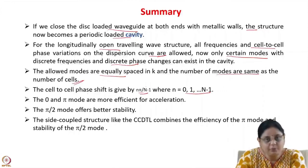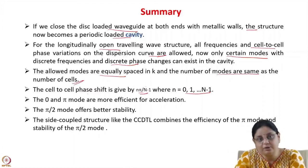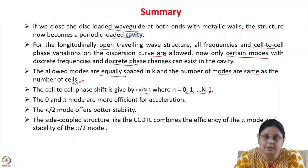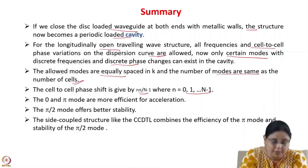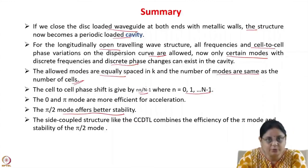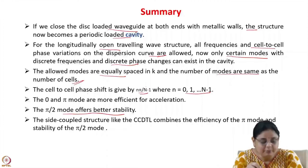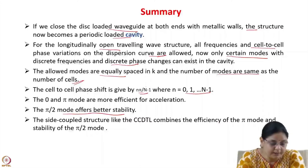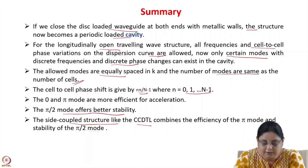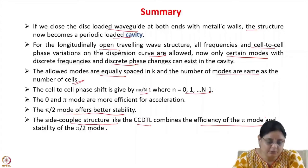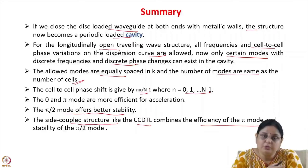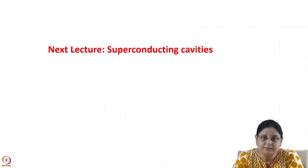The 0 and π modes are more efficient for acceleration because in every cell there is a field in the z direction used for acceleration. For the π/2 mode, every alternate cell is unexcited — there is no Ez field, so it will not help in acceleration. However, the π/2 mode offers better stability. You can combine the efficiency of the π mode and the stability of the π/2 mode in a side-coupled structure like the CCDTL. In the next lecture, we will study about superconducting cavities and how they are useful for acceleration.